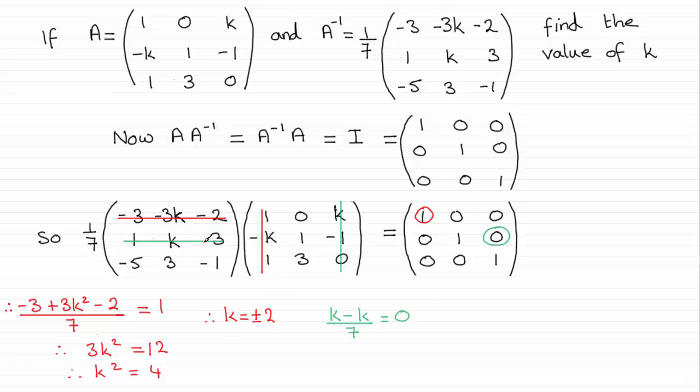That would be the second row, last column. Well this doesn't get me anywhere because if I multiply by 7, I get k minus k equals 0. Well we end up with 0 equals 0. So that's no good. Well I did that on purpose because I knew that it was going to give me that solution.